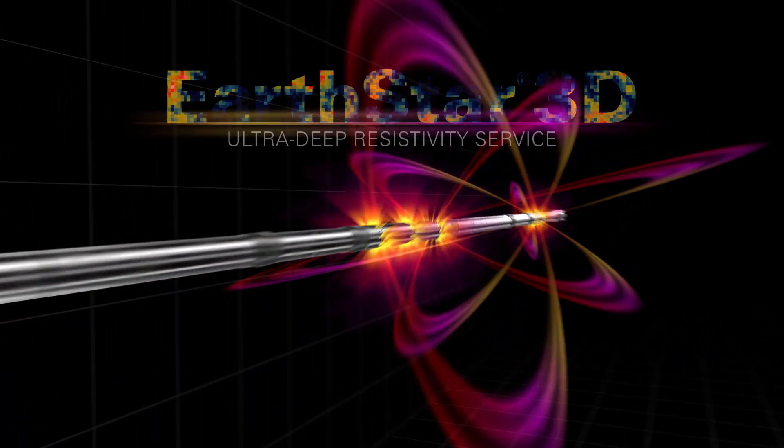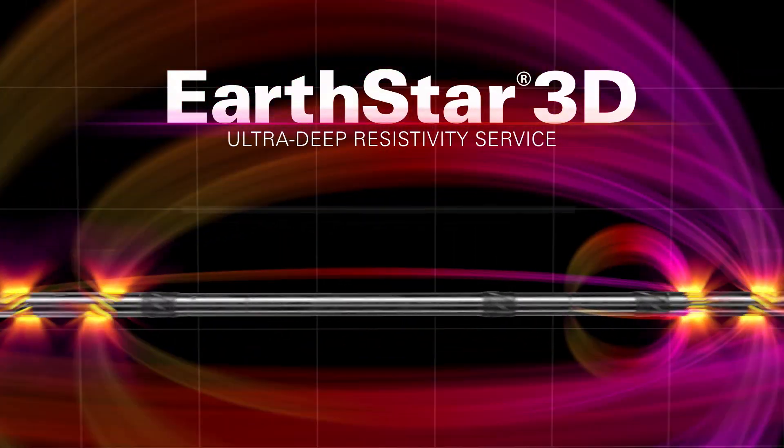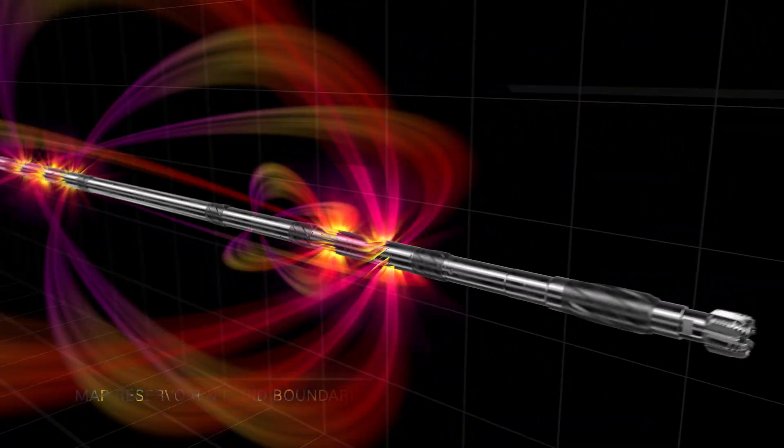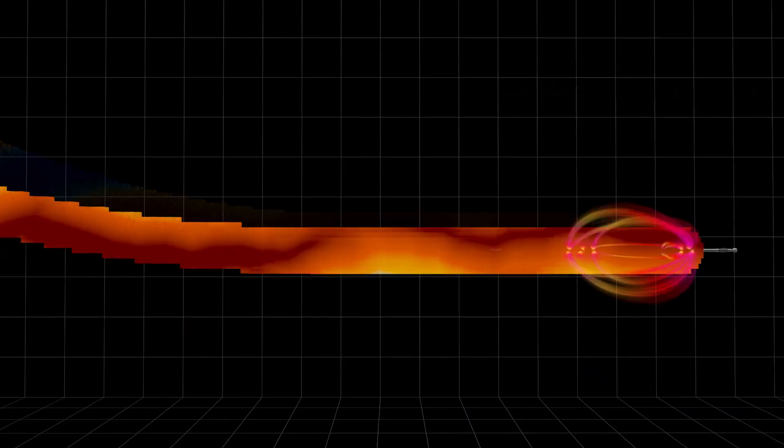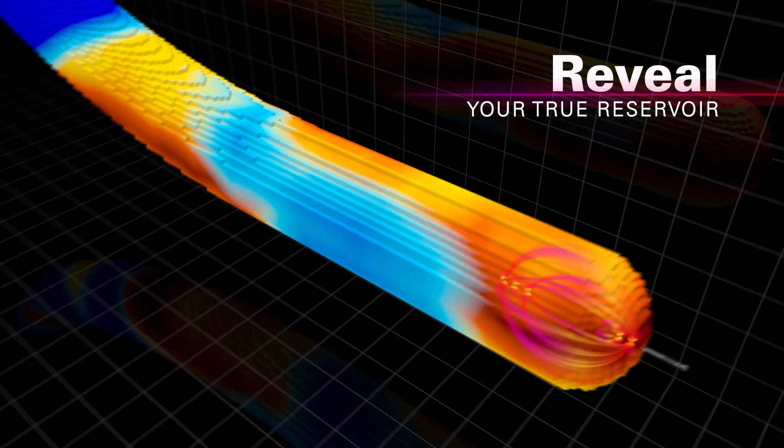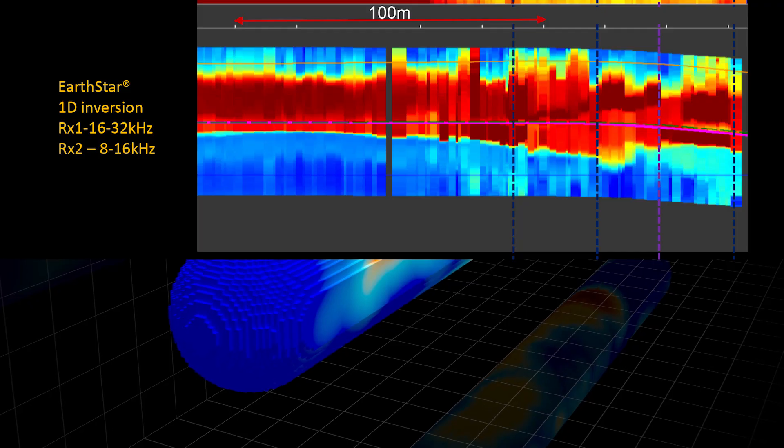Geology is 3D, and a 3D challenge requires a 3D solution. EarthStar 3D ultra-deep resistivity service from Halliburton helps operators map reservoir and fluid boundaries while drilling the well to reveal your true reservoir.